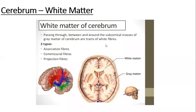The white matter of the cerebrum comprises nerve tracts that are either passing from one hemisphere of the cerebrum to the other hemisphere, connecting different regions within the same cerebral hemisphere, or connecting the cerebrum as a whole with different other parts of the brain.